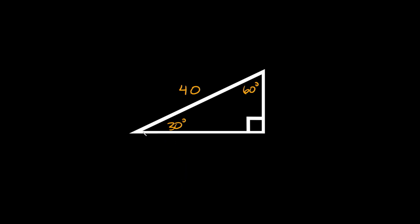Here is our next example. We have our 30-60-90 triangle and we know the hypotenuse, which is 40. We're trying to find the short leg and the long leg. We want to find the short leg first. Since the short leg is half the size of the hypotenuse, and the hypotenuse is 40, the short leg equals 20. Then the long leg — the one with the root 3 — is equal to 20√3.